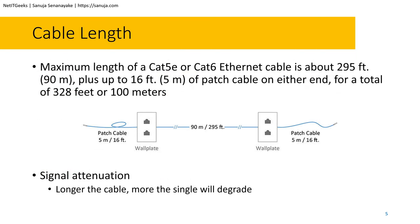The maximum length of a Cat5e or Cat6 Ethernet cable is about 295 feet, which is about 90 meters. We calculate that by accounting for up to about 16 feet — approximately 5 meters — of patch cables on either end. Cat5e and Cat6 are actually rated for 100 meters, but we typically don't go more than 90 meters between devices.